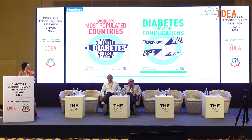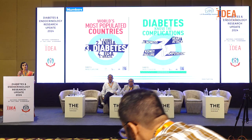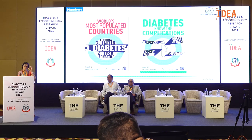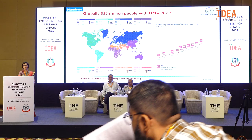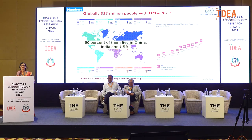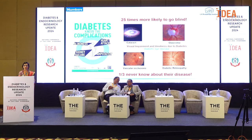When we look at the numbers, India is among the world's most populated countries. China has the highest number of people with diabetes and India is just second to them. When we look at diabetes, it acts like a window to systemic diseases — affecting not just the retina but also causing cataracts, refractive errors, glaucoma, and venous occlusions.